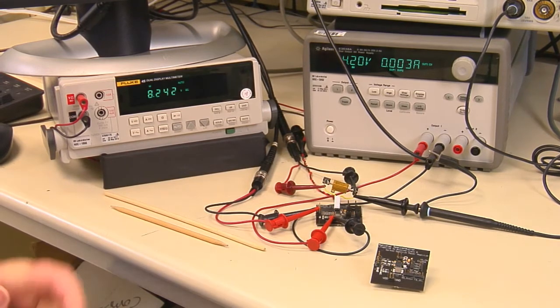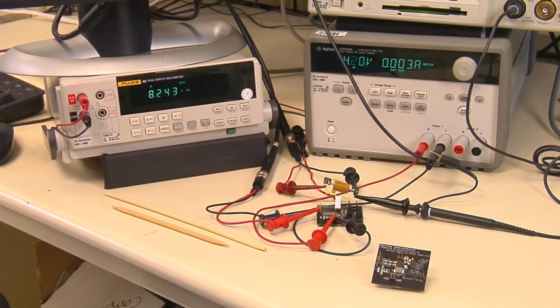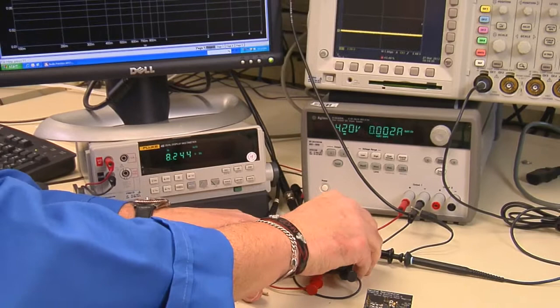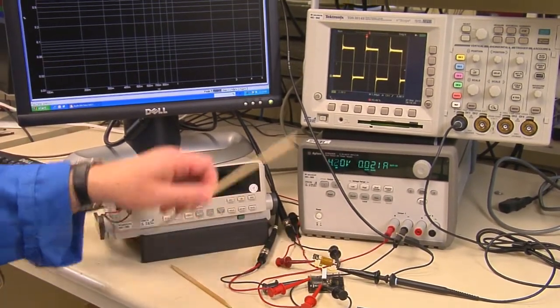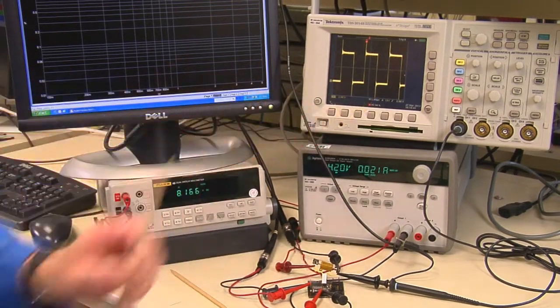The second thing I'm going to do now is to turn on the Class D switching amplifier. I'll do that by changing this jumper. And as you notice, we now have the switching waveform on the oscilloscope of one of the outputs.